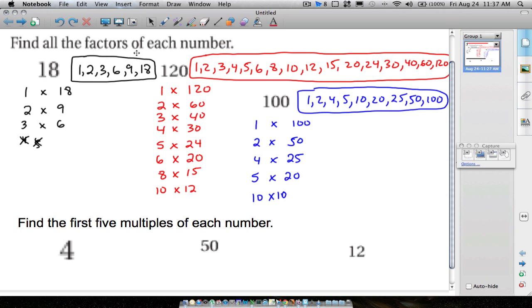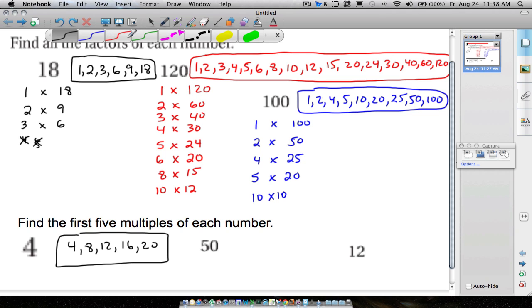So if we want to find the first five multiples of 4, just do your multiplication tables. 4 is a multiple of 4. Then we have 8, 12, 16, 20. All you're doing is multiplying. These are not factors of 4. These are multiples of 4. 4 times 1 is 4, 4 times 2 is 8, 4 times 3 is 12, 4 times 4 is 16, 4 times 5 is 20. That's what we're doing for all of these examples.